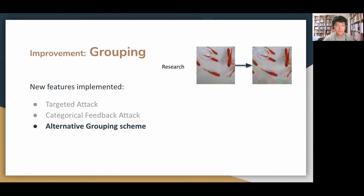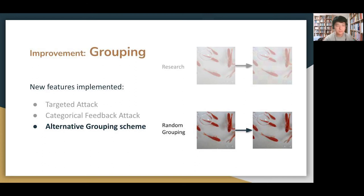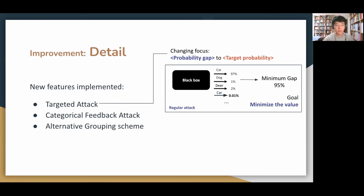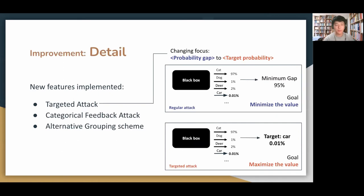Lastly, to avoid very distinctive weird artifacts of grouping, we tested out different grouping schemes rather than square grouping. In order to perform targeted attack, the original fitness of probability gap was replaced by the targeted class's probability and the aim to maximize the target value.